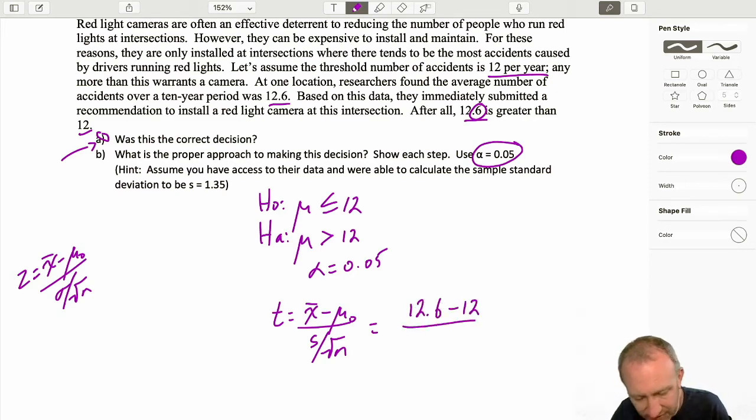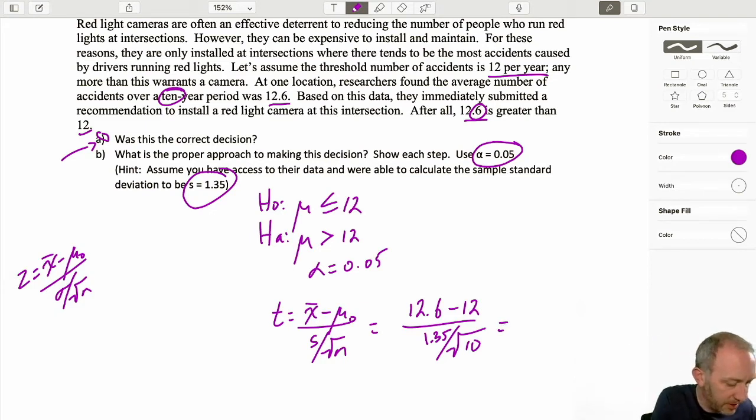Where's my S? Oh, here we assume we do have the sample standard deviation is 1.35, divided by the square root—well, this is the average over a 10-year period. So let's see what this is going to give us: 12.6 minus 12 over 1.35 root 10. So here I have a T statistic of 1.41. I'm rounding it to two decimals.